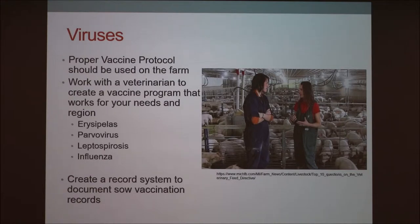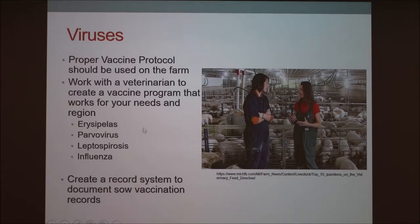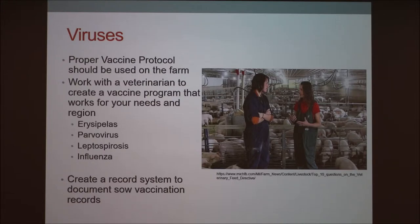Viruses are a pretty common issue, because people don't keep up with sow vaccinations. Usually you vaccinate your baby pigs and then they just go on and you don't vaccinate anymore. You want to make sure you have a proper vaccine protocol for your farm, dependent on your program, the number of sows you're running, and the region you live in. These are some basic viruses you should vaccinate for. The Purdue farm actually had a leptovirus outbreak and they weren't vaccinated for that particular strain, so you definitely want to watch for that if you're having low conception rates. Talk to your veterinarian about finding a good protocol.